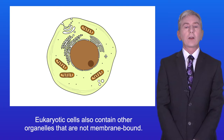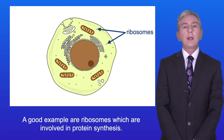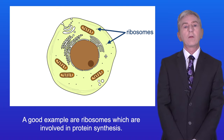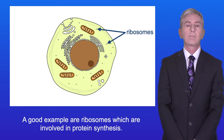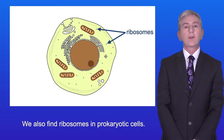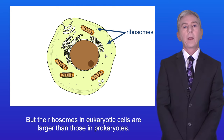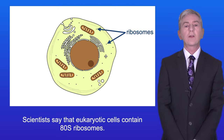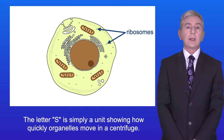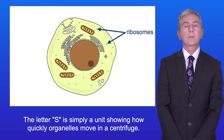Eukaryotic cells also contain other organelles that are not membrane-bound, and a good example are ribosomes, which are involved in protein synthesis. We also find ribosomes in prokaryotic cells, but the ribosomes in eukaryotic cells are larger than those in prokaryotes. Scientists say that eukaryotic cells contain 80S ribosomes, and the letter S is simply a unit showing how quickly organelles move in a centrifuge.